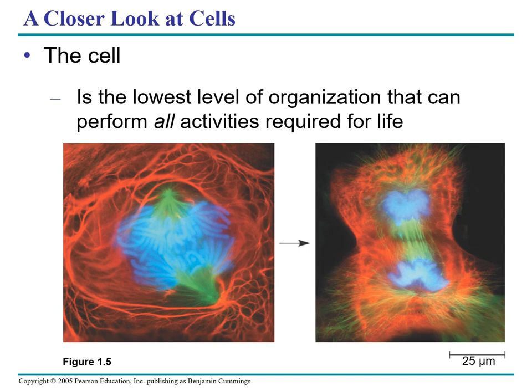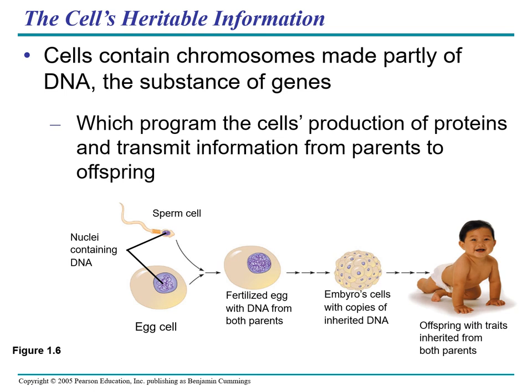Next we have the cell — the lowest level of organization that can perform all the activities required for life. Within cells, structures called chromosomes contain genetic material in the form of DNA. DNA stands for deoxyribonucleic acid. In cells preparing to divide, chromosomes may be made visible using a dye that appears blue when bound to DNA. Cells contain chromosomes made partly of DNA — the substance of genes — which programs the cell's production of proteins and transmits information from parent to offspring. Inherited DNA directs development of an organism, starting with egg cells, then the fertilized egg with DNA from both parents, and formation of embryo cells with copies of inherited DNA.